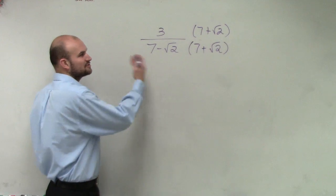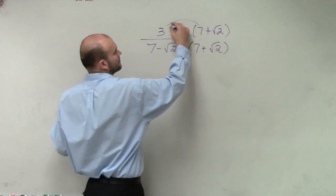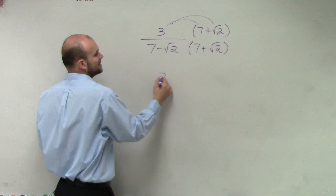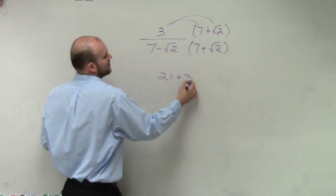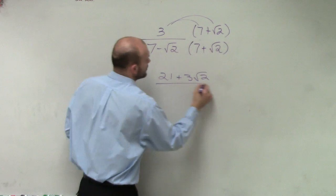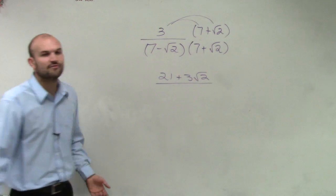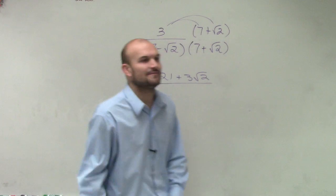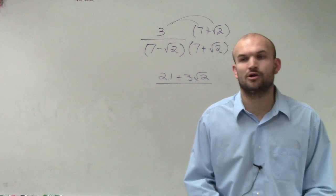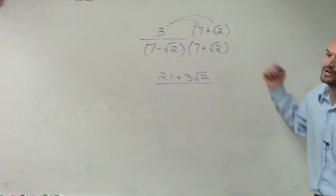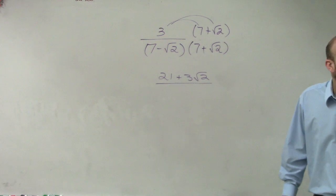So what we're going to do now is just multiply across. So this becomes 21 plus 3 radical 2, all divided by, now I have to multiply these two, right? So I have to use FOIL. Now, if they weren't difference of two squares, FOIL or the box method would work. If you guys want to do that and check your answer against mine, please do.